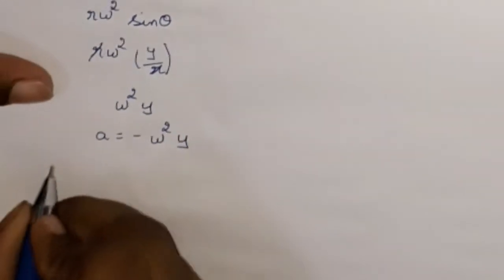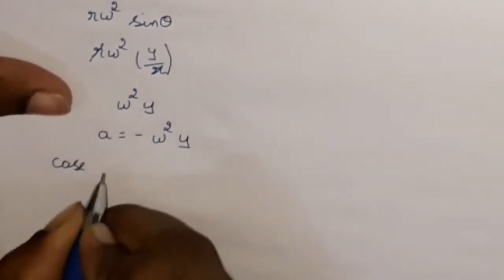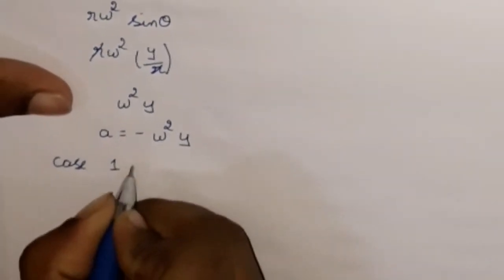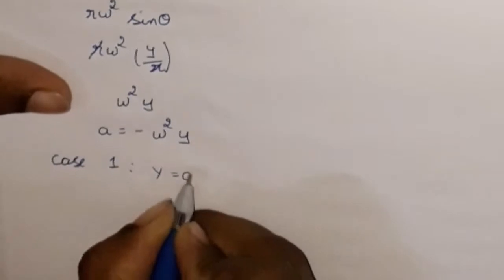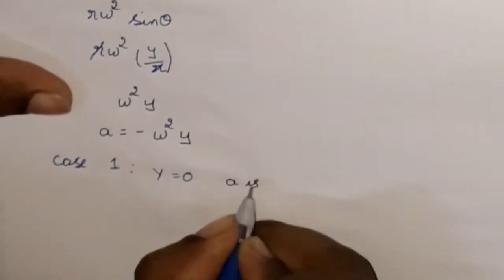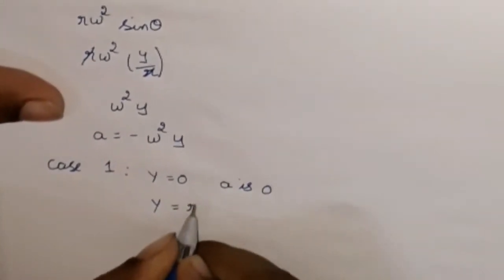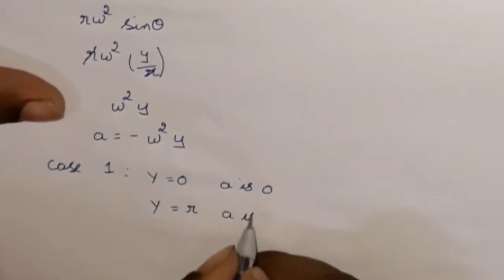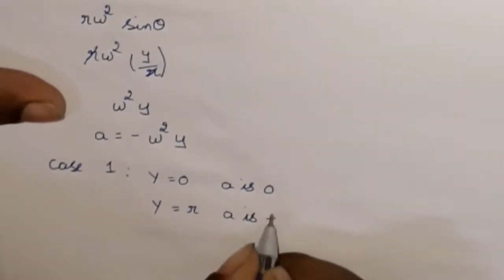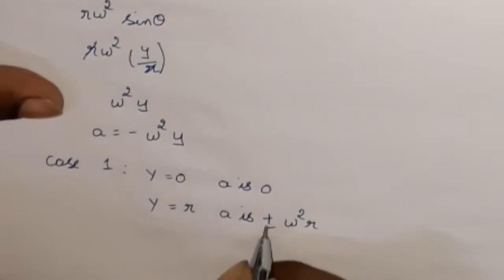We will write the cases. Case 1: When y equals 0, acceleration a is 0. When y equals r, then a equals plus or minus omega² r. So at the mean position acceleration is zero, and at the extreme position acceleration is maximum.